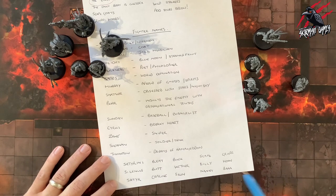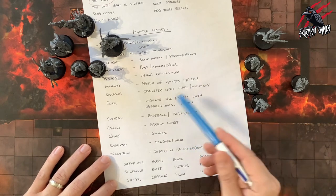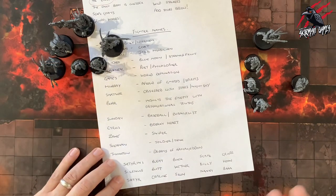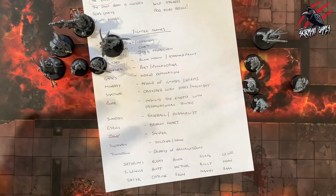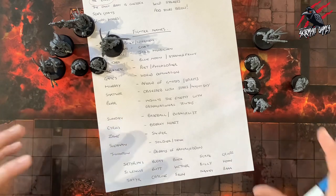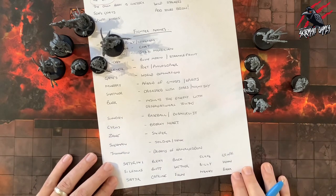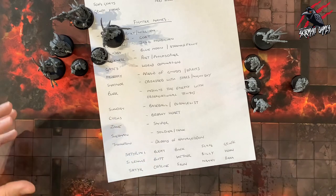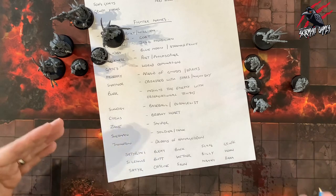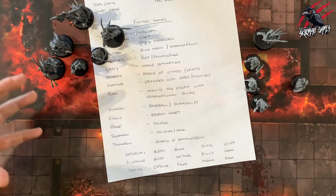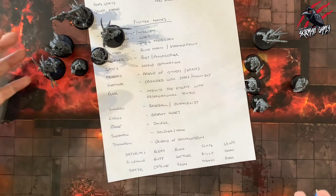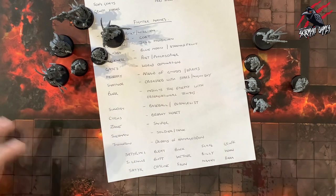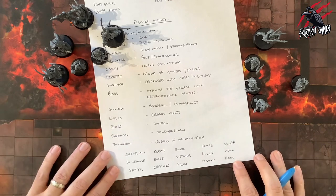I'll probably write a paragraph for each one, assign the name to the miniature I want it to go with, and that's really going to give me ownership of that warband and the individual fighters within it. That's going to make it really fun as we're playing — if any get injured or die, you're going to lose them and you've got some attachment to them and the background you've developed. I think that's going to be a really fun part of the game for sure.